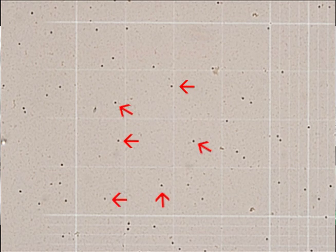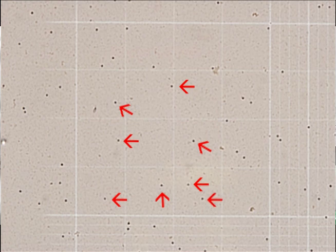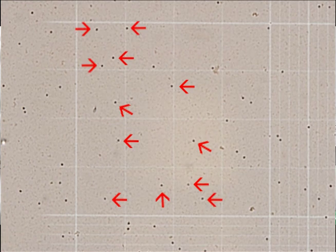After completing the count on each side of the hemocytometer, make sure to note your results on a lab report form. That concludes the demonstration of the manual white cell count.